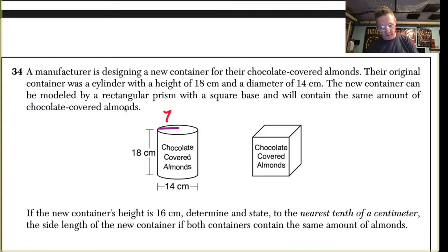So the volume of a cylinder, which they give you, is pi r squared h. So the volume is going to be pi times 7 squared times 18. What is that? That's pi times 49 times 18.